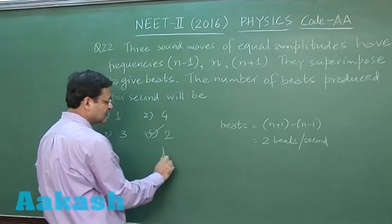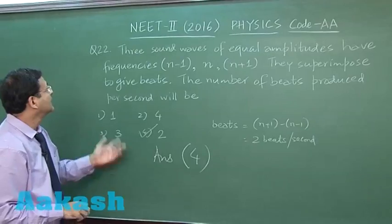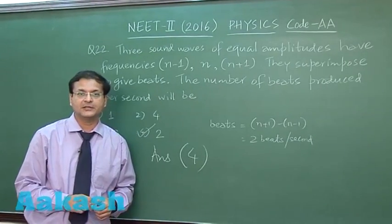They are asking the number of beats produced per second will be, so this is the difference of extreme values. I will be marking answer option 4 for this question. Now let us switch over to next question, that is question 23.